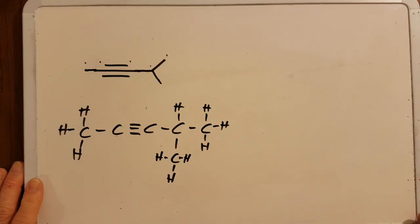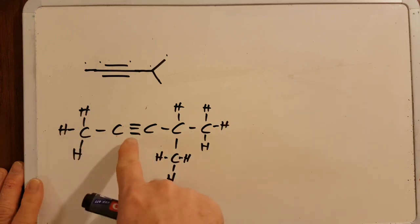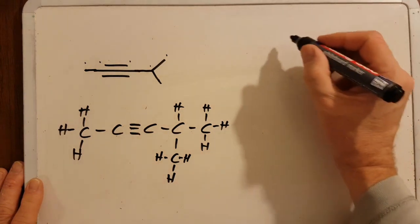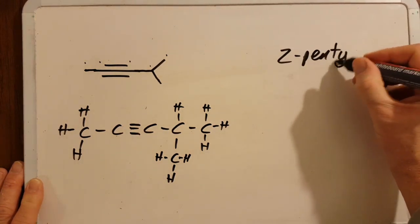How would I name it? You've got to lock yourself down to the numbering system that gives the triple bond the lowest number. So one, two, three, it's between the two and the three, so it's going to have to be 2-pentyne because the longest chain is five, that's pent, and yne is the triple bond.